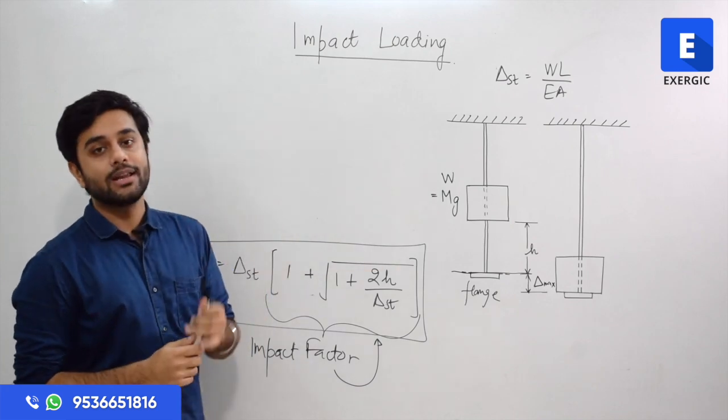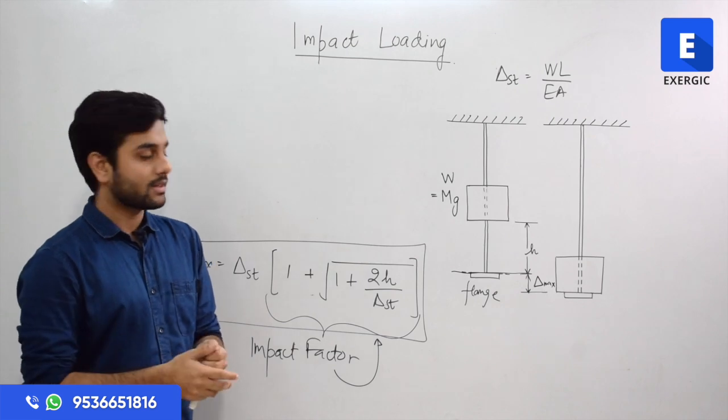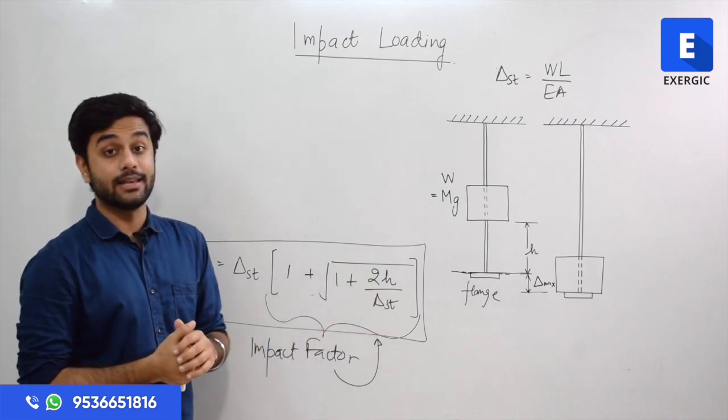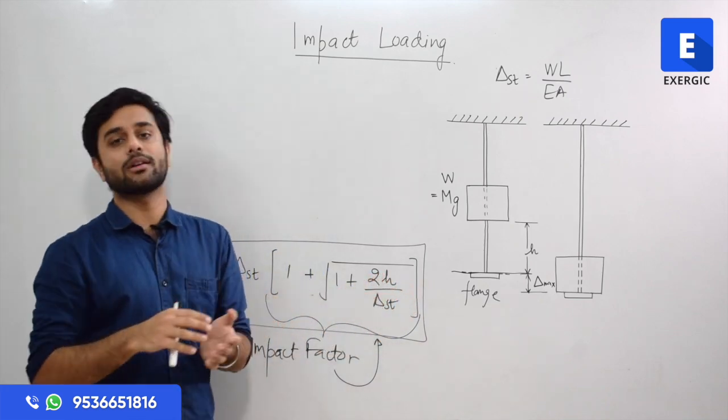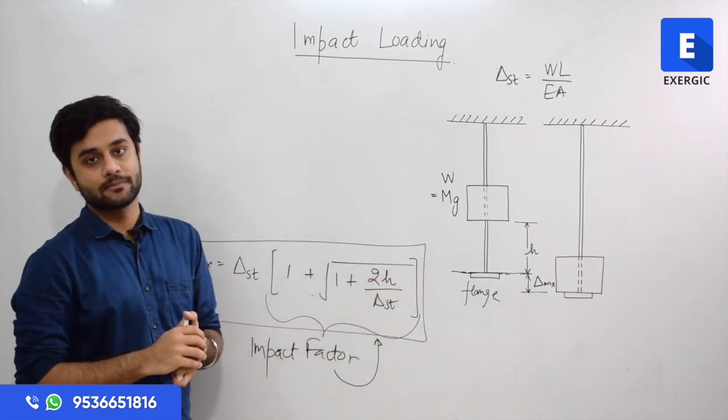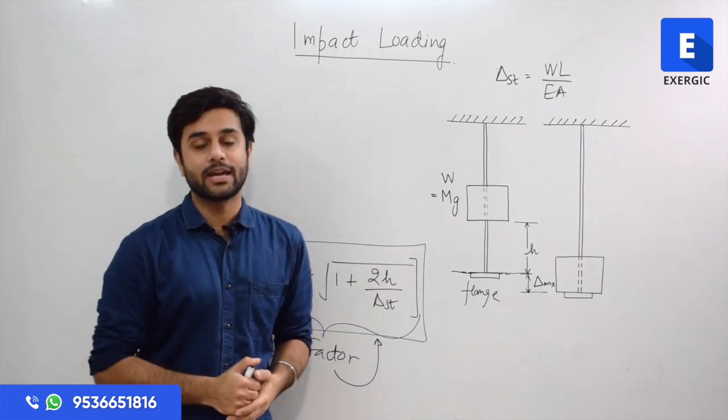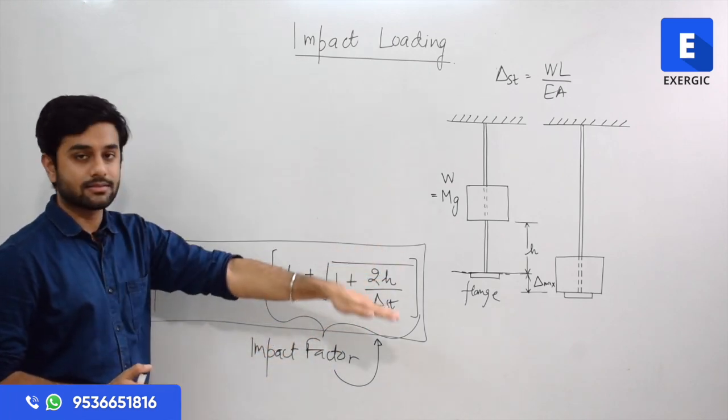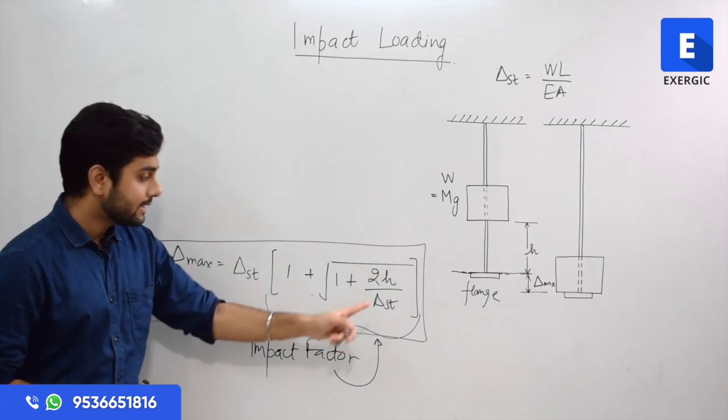If height from which it is falling is much more as compared to deflections, let's say delta_st static deflection in this case, because static deflection is even smaller than the maximum deflection. So what will we do in this expression? What is the highest term? H. H is the largest quantity. What is the smallest quantity? Delta_st.